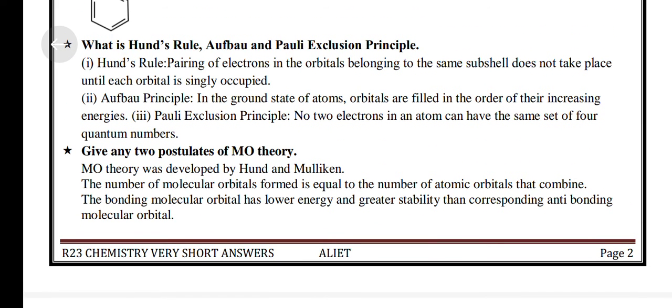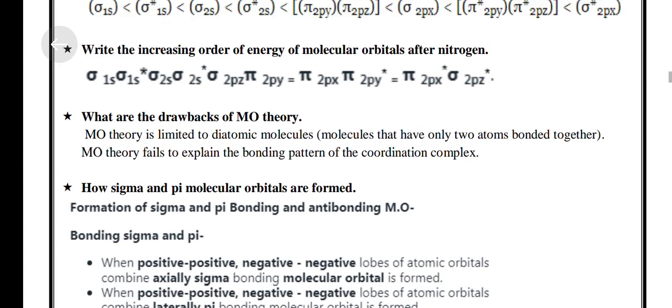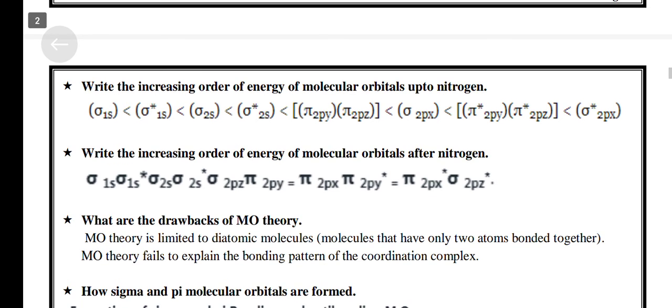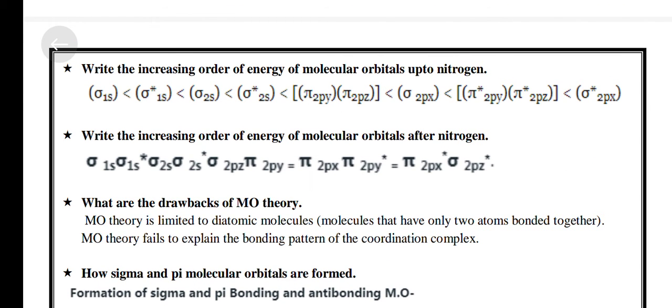Twelfth question: What is Hund's Rule and Pauli's Exclusion Principle? Thirteenth question: Give any two postulates of Molecular Orbital Theory.